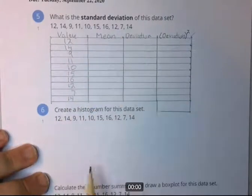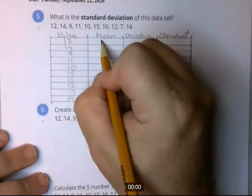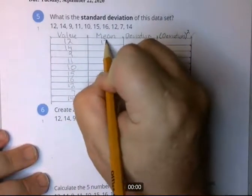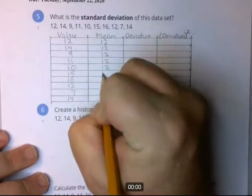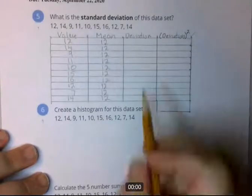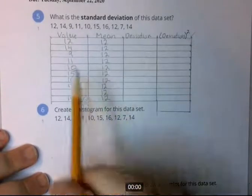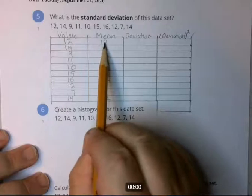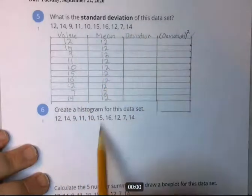Okay, so those are each of the values. Now we're going to put the mean. We calculated that in the first question and that's 12. So it's going to be 12 all the way down. There you go. Now a deviation just means the difference between the two. This number minus this number. So I'm going to go ahead and fill in all of those deviations.